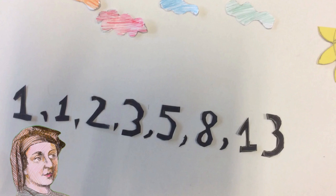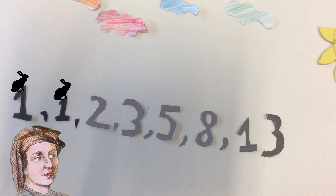In the Fibonacci sequence, each number is the sum of the last two. By introducing one from nothing, we can start the sequence to make another one, and add that number to the previous one to make two. Add the last pair to make the next, and the last pair to make the next, and so on.